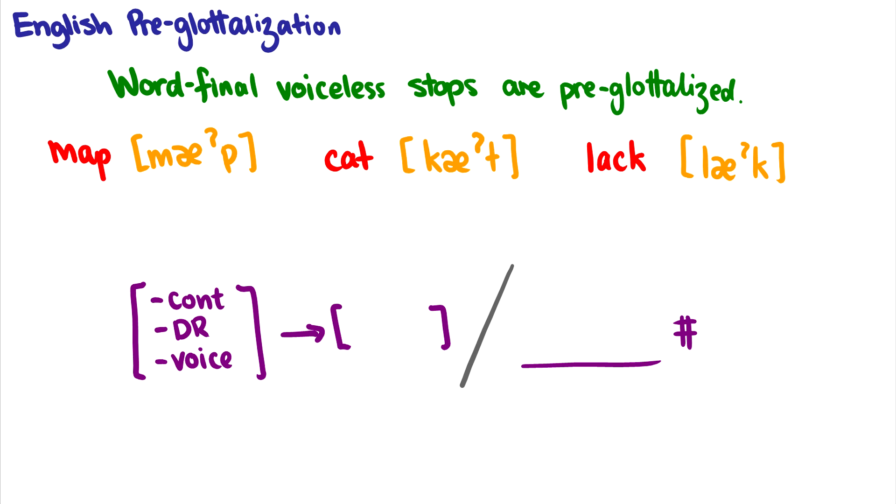And I'm saying they're pre-glottalized. So if you remember, what is the feature that we use for glottal stops? It's something to do with our glottis. Is it spread or constricted? Well it's constricted. So what's happening is that these voiceless stops are getting the plus CG feature or plus constricted glottis feature when they are at the end of a word.